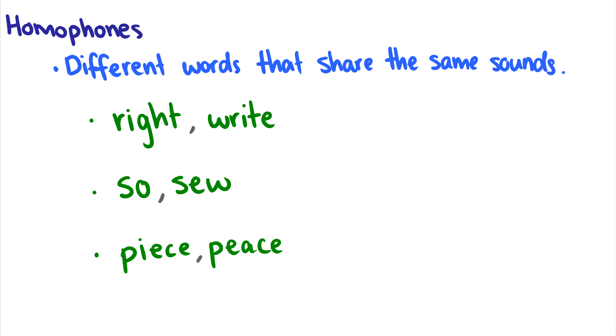Homophones. These are different words that share the same sounds or the same pronunciation. So for instance, homophones could be something like the word right and write. They're pronounced the same, but they have different meanings. He was right. He will write a book. They're different. Or words like so and sew. He's so happy to sew. They're pronounced the same, but they mean different things.